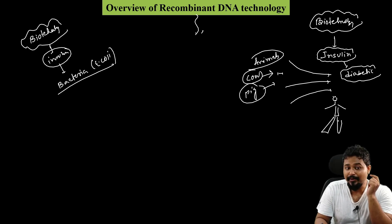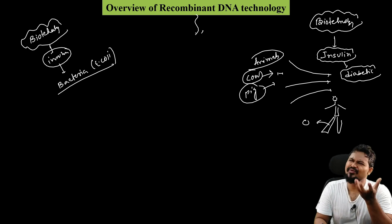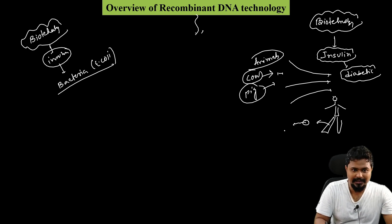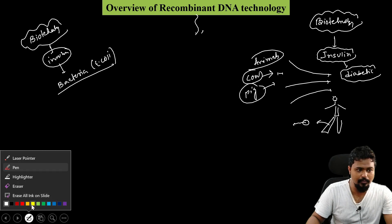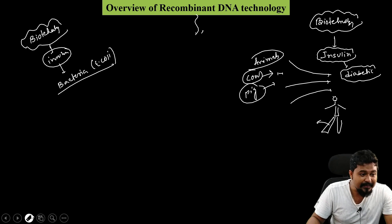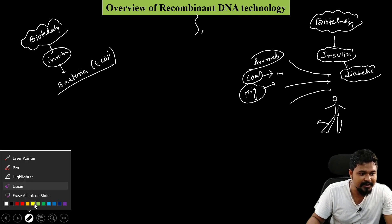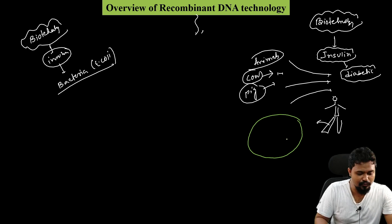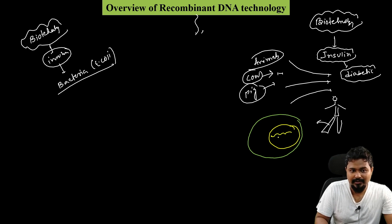Let me explain with a cell example. A human cell contains a nucleus, and the nucleus contains DNA. The DNA inside the nucleus carries the genetic information, including the gene for insulin hormone.